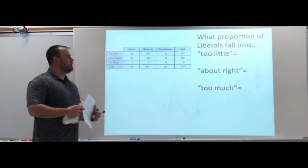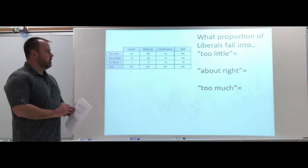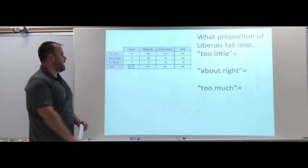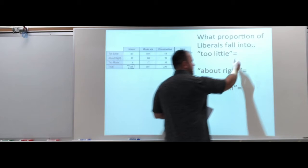Now I'm asking you what proportion of liberals fall into too little, about right, and too much. So now we're looking at just this row of liberals. We're going to concentrate on that 155 and look at too little, about right, and too much for each one. I'm just going to do some quick division.